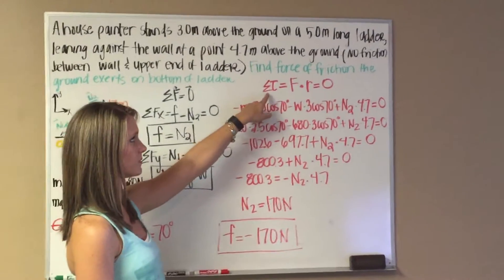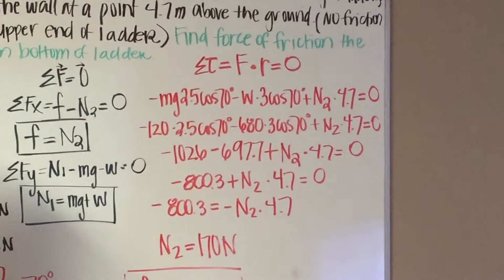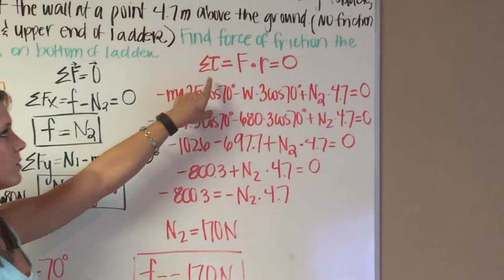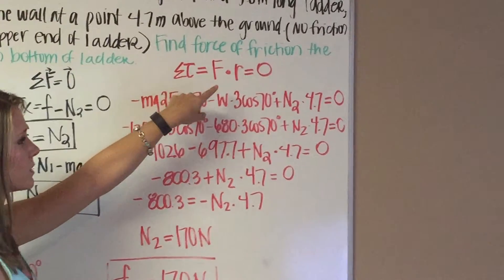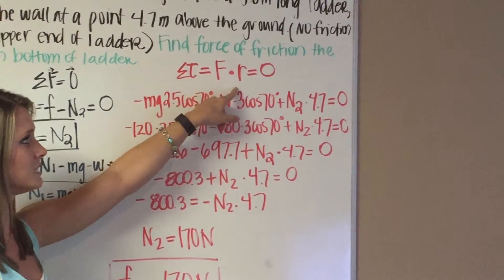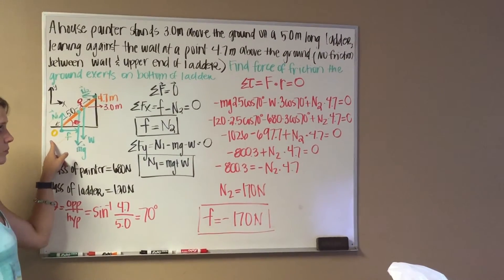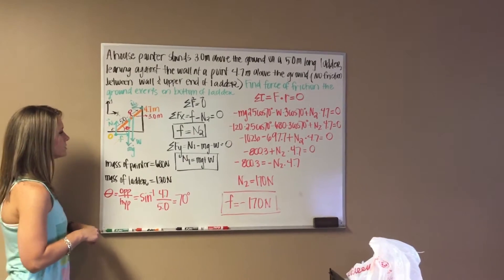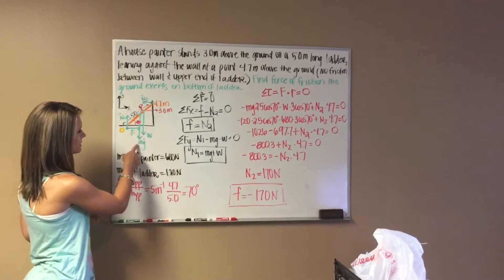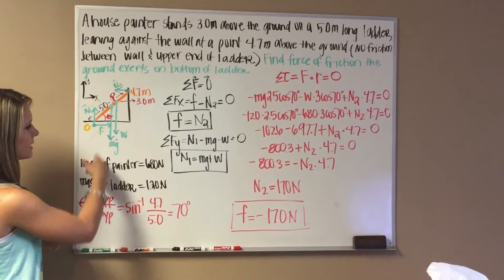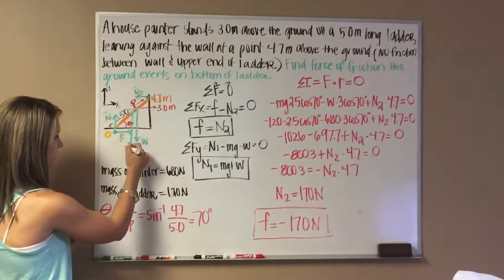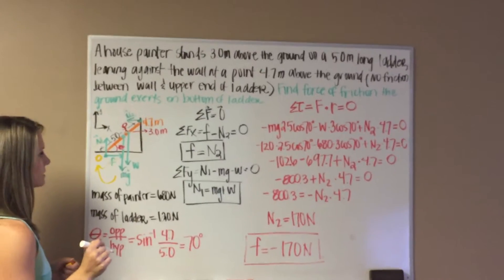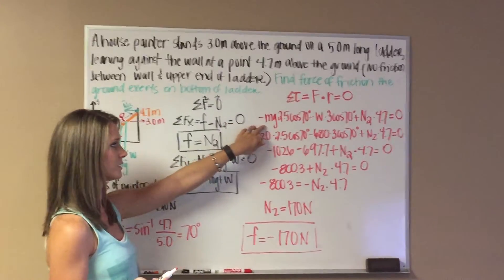Now we find the sum of the torques. Since the sum of the forces equals zero, the sum of the torques also equals zero. The formula for torque is force times distance from the force to the reference point, all equal to zero. Starting with the weight of the ladder: this force acts downward in the clockwise direction relative to our reference point, so it's negative. We write negative mg.